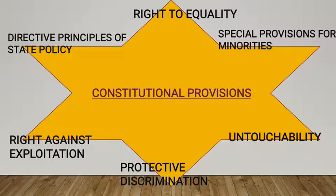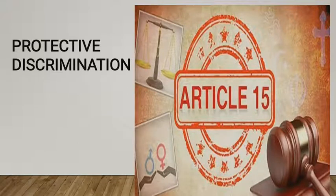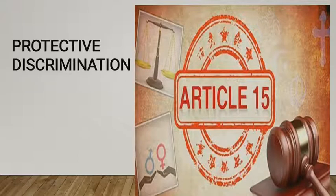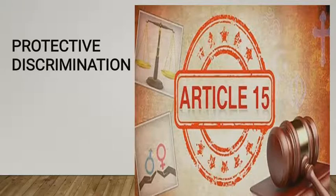In protective discrimination, the protective discrimination comes under Article 15. It means that the state can make special provisions to protect the interest of socially and economically backward classes. The government can implement special schemes and measures so that they can get the opportunity to occupy better social and economic positions.